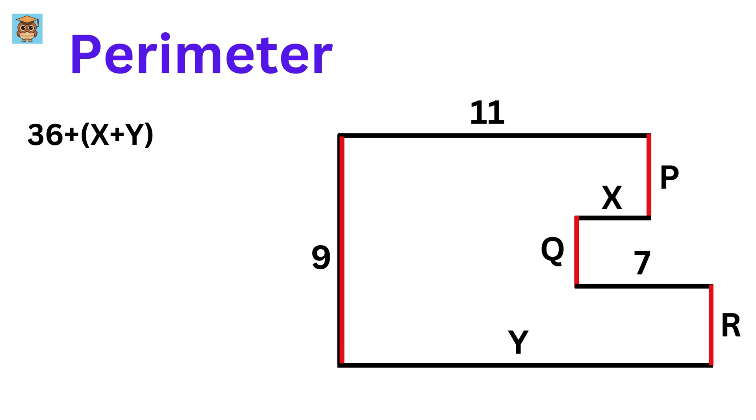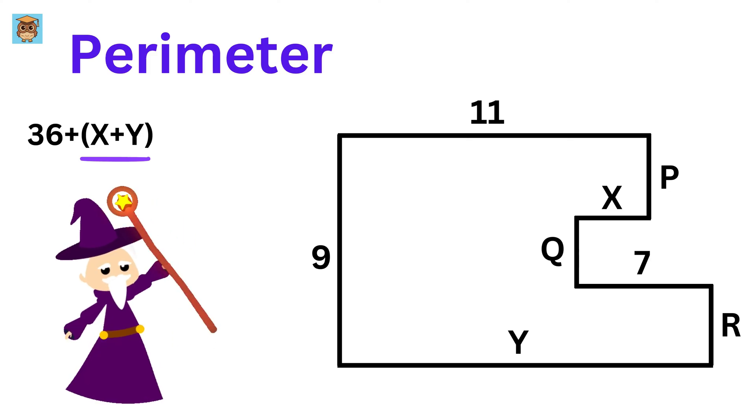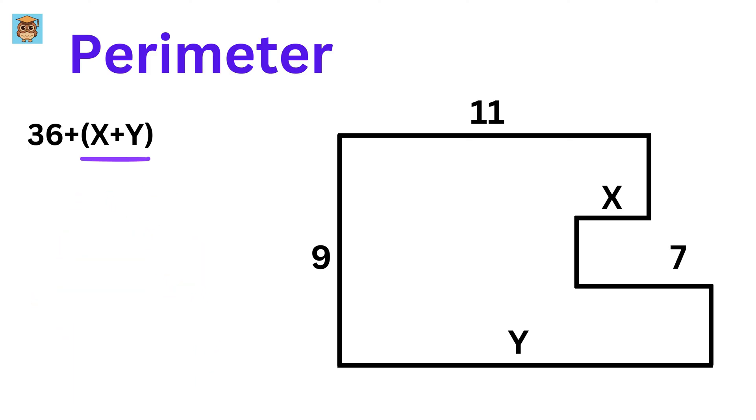Now, how to find the value of this X plus Y? Here comes the magic. To do that, just extend this line like this. If this is X, then this is also X. And since this length is 7, so this length will be 7 minus X.